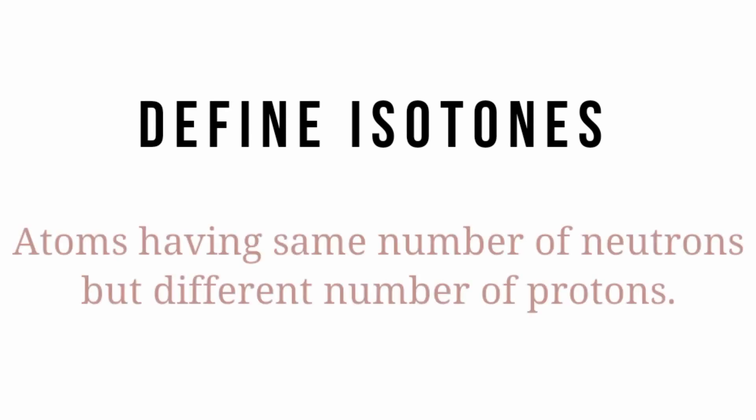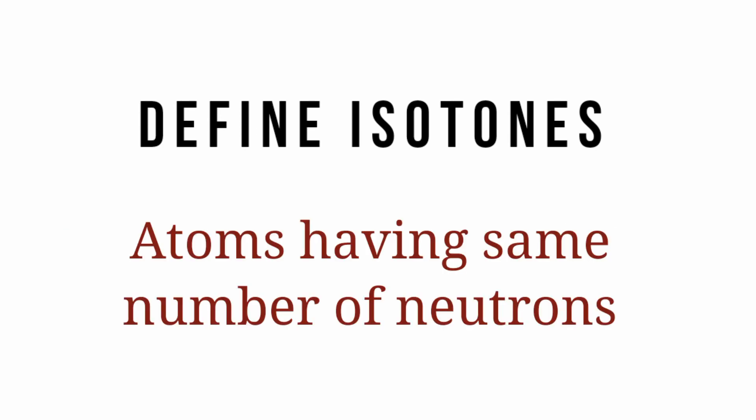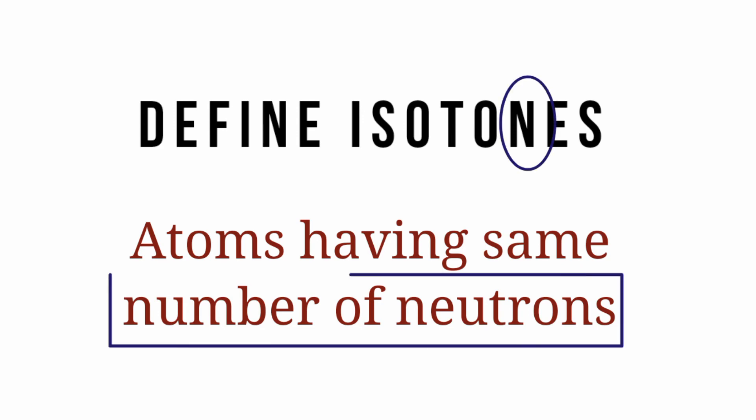Define isotones. Isotones are atoms having the same number of neutrons but different number of protons. The 'n' in isotones represents the same number of neutrons.